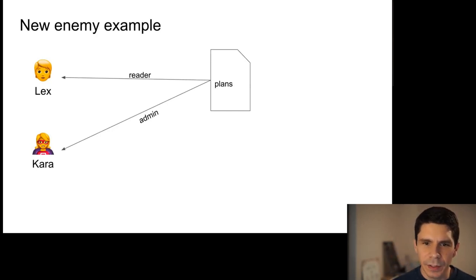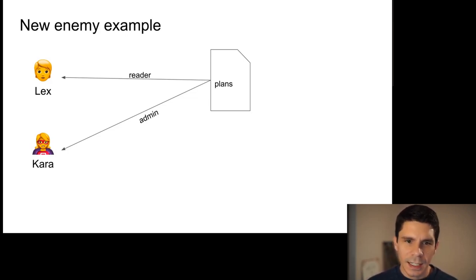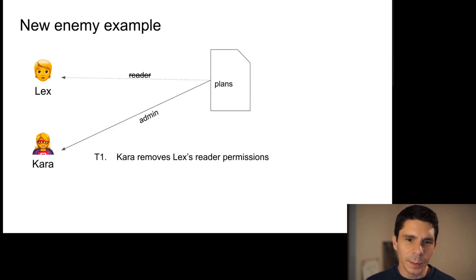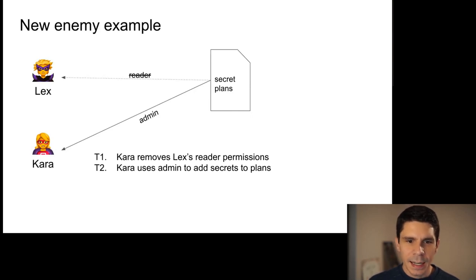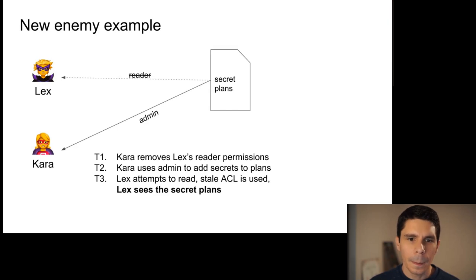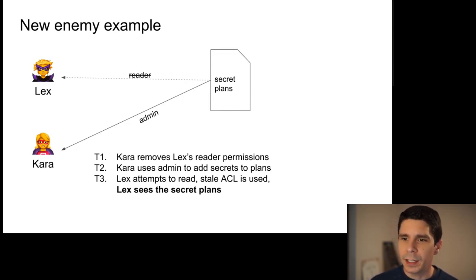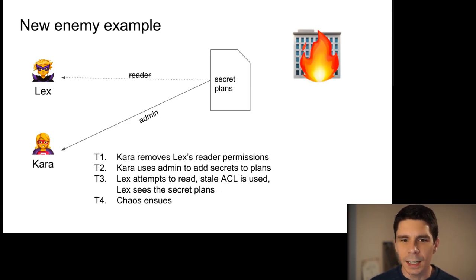Quick example: we have a document called 'plans.' Lex has read access and Kara has admin access. At T1, Kara removes Lex's reader permission. At T2, Kara uses admin permissions to add secrets to the plans. At T3, Lex attempts to read — but a stale ACL was used because the data wasn't replicated, so Lex is allowed to see the secret plans and causes chaos, as Lexes are wont to do.